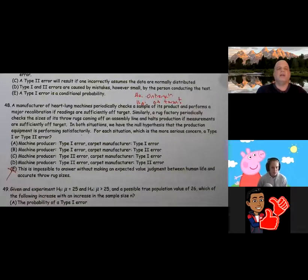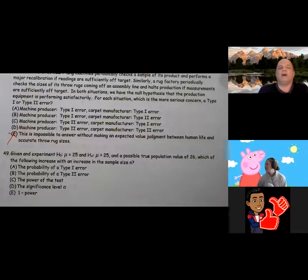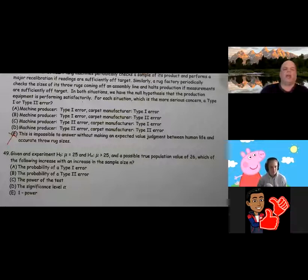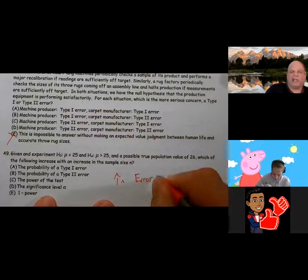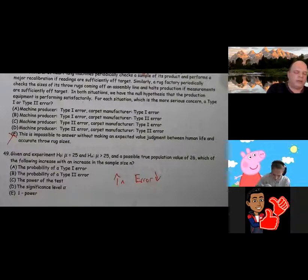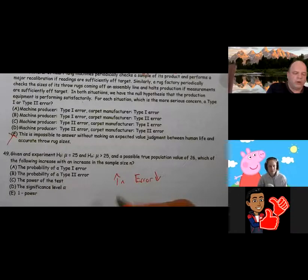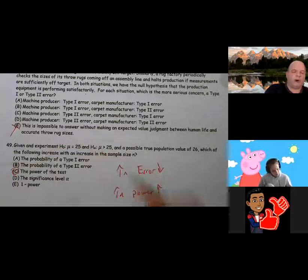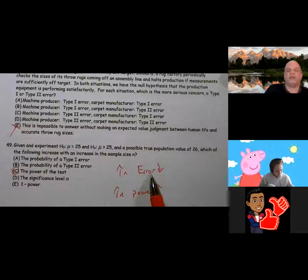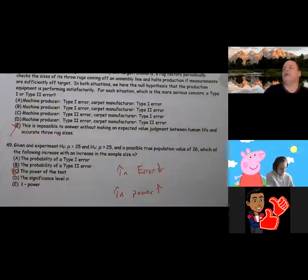Problem 49, given an experiment, the mean is 25 and the alternative is greater than 25 and a possible true population value of 26, which of the following increases with an increase in sample size? Okay, so as you increase sample size, error decreases. So increase in error goes down. We like increasing sample size. But as we increase sample size, power goes up. All right? So as we increase sample size, power goes up. And that's why we like increasing sample size. Increasing sample size decreases error. It doesn't eliminate it. But increasing error decreases the sampling error or the sampling variation. So increasing sample size is a good thing. It helps with some things and eliminates other things.